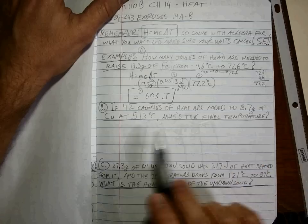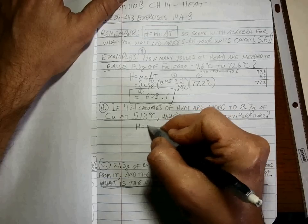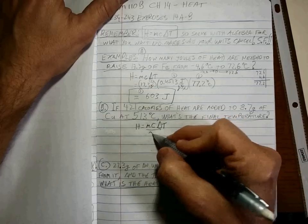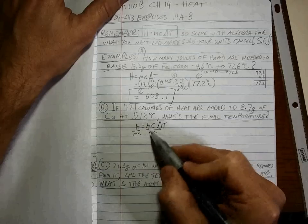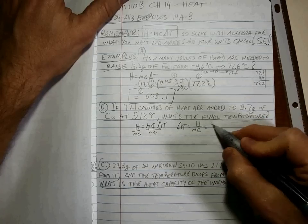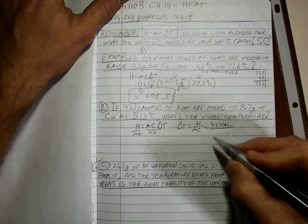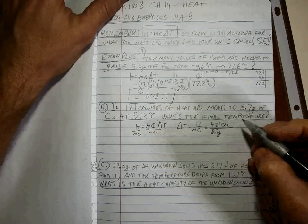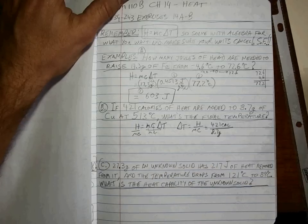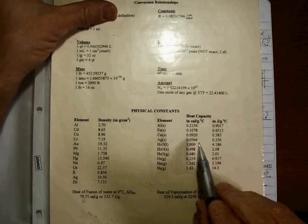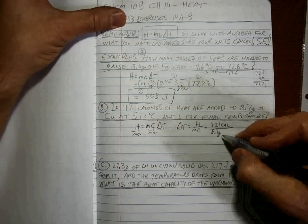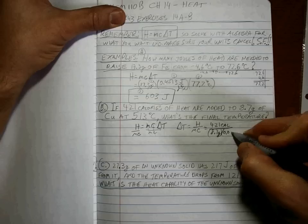Alright, let's try the next. Calories of heat added to this many grams at this temperature, what's the final temperature? So this time H = mc∆T and we're trying to find temperature, so let's solve for temperature by doing our algebra. Write it all out, what's the harm? The heat is 421 calories, the mass is 8.7 grams, and the c is for copper.